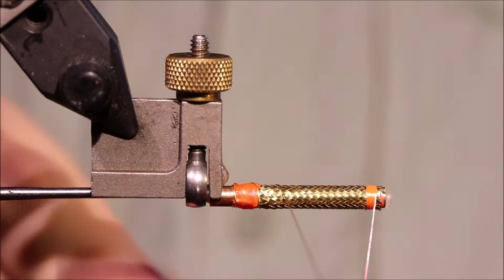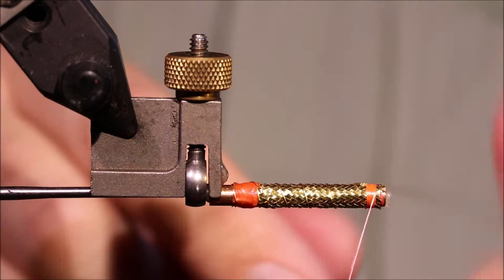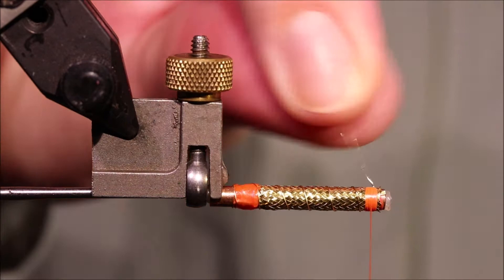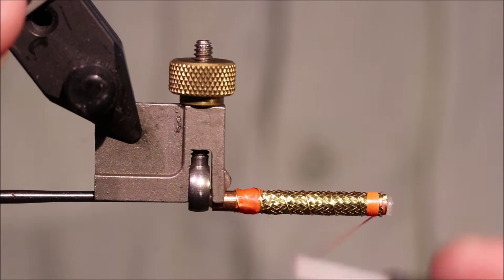And while that's sitting I'll just come up with the rib. We'll take a full turn at the back and then one over the tag. And then come up. Four or five turns up the body is plenty. Come across the thread, bend the wire, work it in place. Bend and break that away.